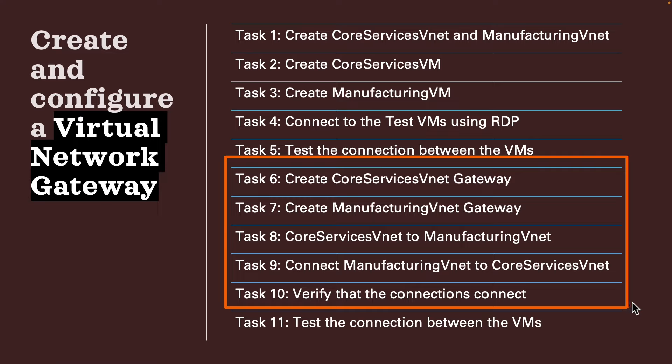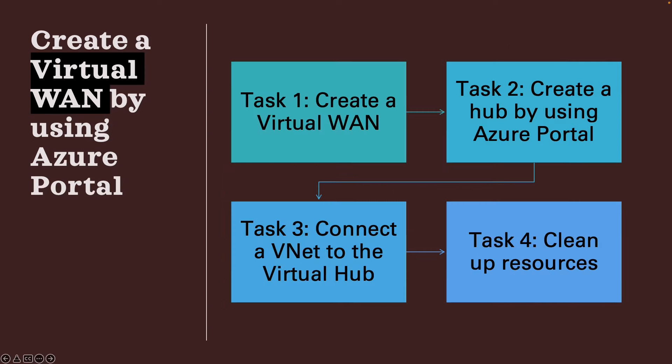Now that we have learned about how to create a virtual network gateway and establish a connection, in this exercise we are going to learn how to create a virtual WAN using the Azure portal. The main tasks are: create a virtual WAN, create a hub using the Azure portal, connect a VNet to the virtual hub, and finally clean up all the resources created.